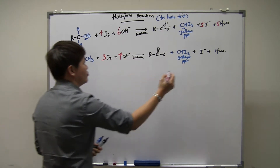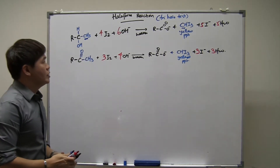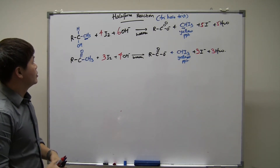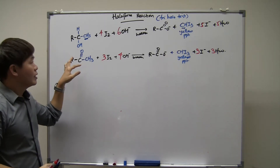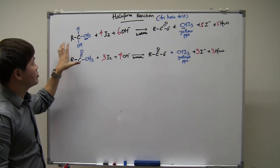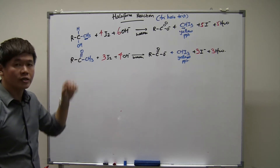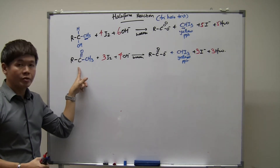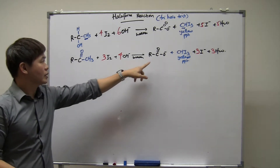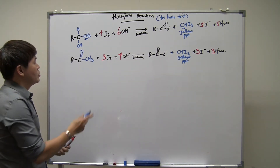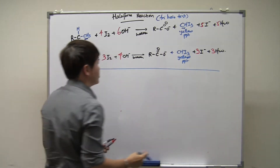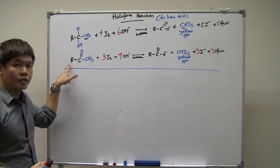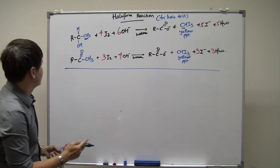Many students, when they learn these two reactions taught in two different chapters, think of them as totally different reactions. But what I'm going to show you is that these two reactions are actually linked together in the same mechanism. The reaction actually starts from the alcohol, and the carbonyl is going to be the intermediate. The carboxylate group is going to be the final product. So let's take a look at the mechanism of this iodoform test, starting with the alcohol as the first step, with the carbonyl as the intermediate.